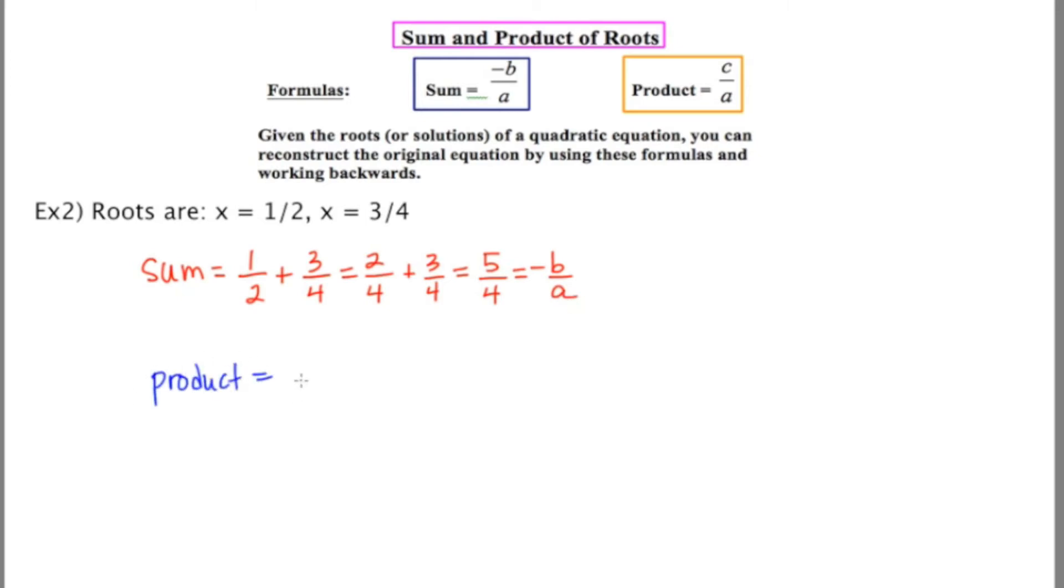Now the product is going to equal 1 half times 3 fourths, which turns out to be 3 eighths. I'm going to set that equal to c over a. Now I'm noticing something that's going to be important: here a is aligned with 8, but here a is aligned with 4. That's going to be a problem because a needs to be the same thing. So I'm going to have to find a common denominator between 4 and 8, which is 8, and rename this fraction. Instead of thinking of this fraction as 5 fourths, I'm going to think of it as 10 eighths. Now I'm going to identify a, b, and c in the cubby. a is paired with 8, negative b is paired with 10, so b is going to equal negative 10, and c is paired with 3.